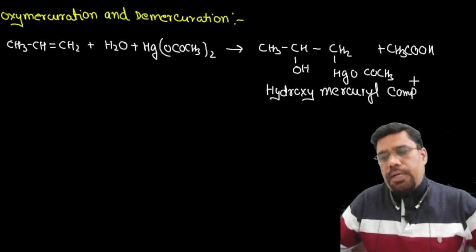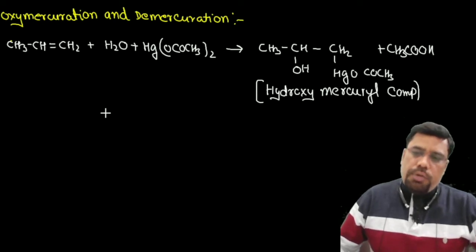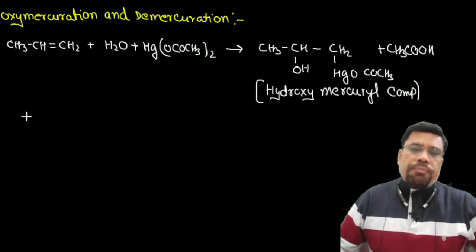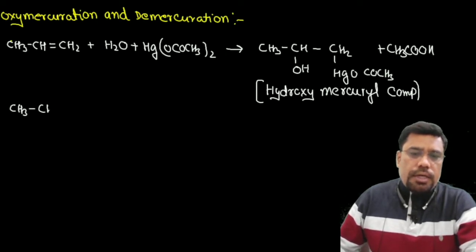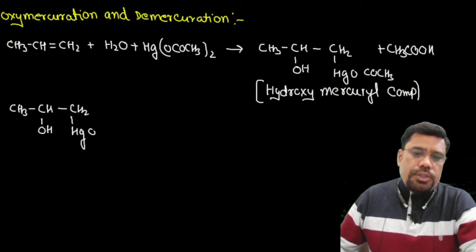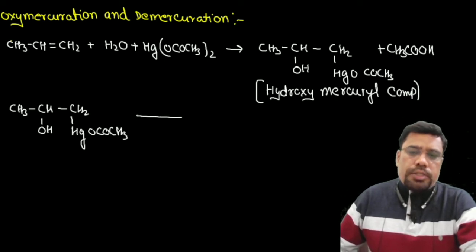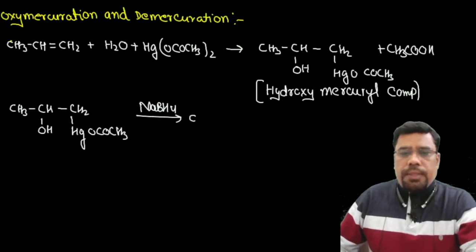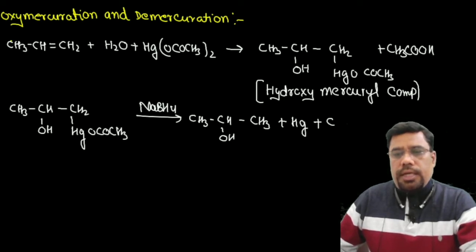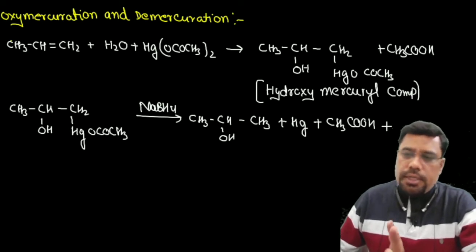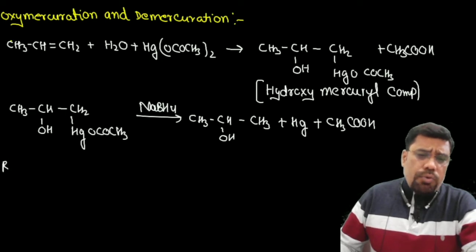यह hydroxymercurial compound stable नहीं होता, इसलिए इसका reduction करा देते हैं। Compound को NaBH4 — जो best reducing agent है — के साथ treat करते हैं। Reduction के बाद compound बनता है: CH3-CH(OH)-CH3 यानि propan-2-ol, और साथ में mercury और acetic acid CH3COOH निकल जाते हैं।